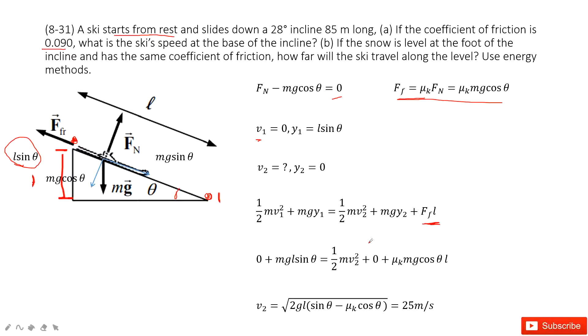We input the known quantities: V1 is 0, Y2 is 0, and this is mu_k Mg cos theta there. Therefore, we can solve the problem. We solve this equation and get V2 equals square root of 2gl(sin theta minus mu_k cos theta).